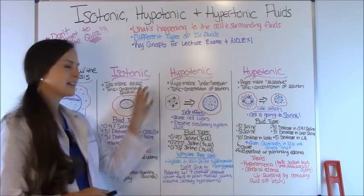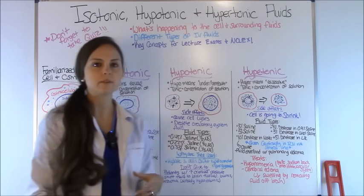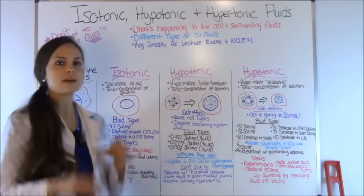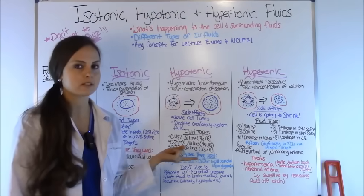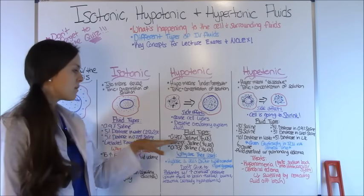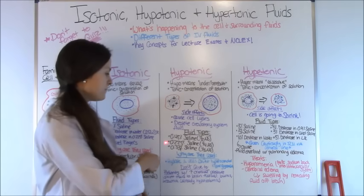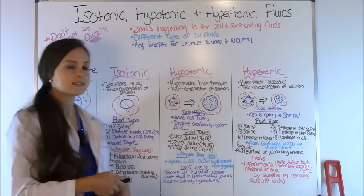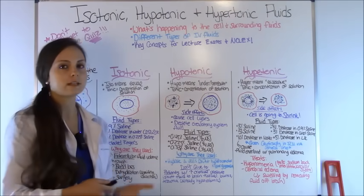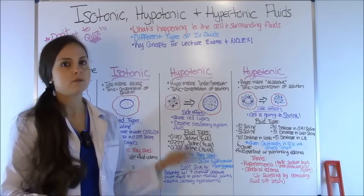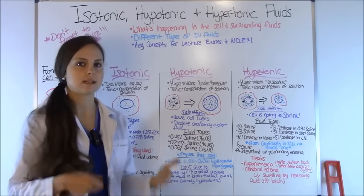There are three hypotonic solutions to remember. A helpful memory trick: hypo is less, so there are only three. They are 0.45% saline (half normal saline), 0.22% saline (one-fourth saline), and 0.33% saline (one-third saline). D5W is also sometimes used as a hypotonic solution because the dextrose is metabolized. These low percentages indicate they are hypotonic — pay attention to those numbers.